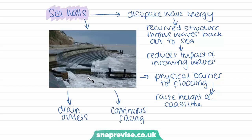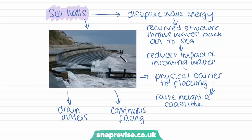Seawalls dissipate wave energy. Due to their recurve structure, they are slightly curved, which throws waves back out to sea. Those waves then hit incoming waves and reduce their impact. Seawalls also act as a physical barrier to flooding by raising the height of the coastline. They must be continuous with no cracks, as water would erode any gap and widen it. Small drain outlets allow any water that overtops to drain back into the ocean.